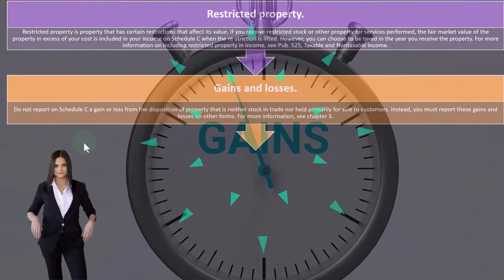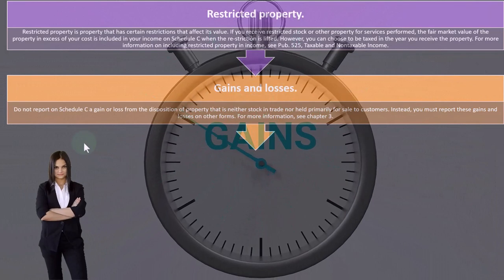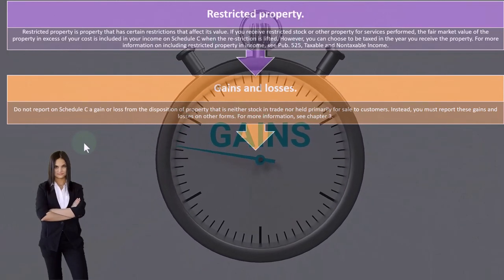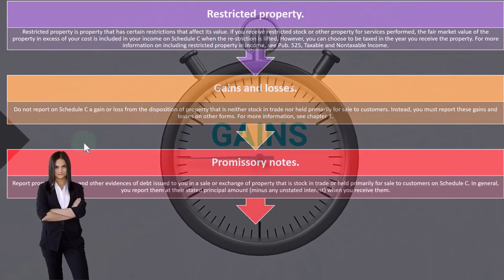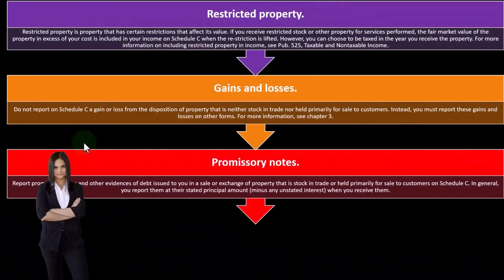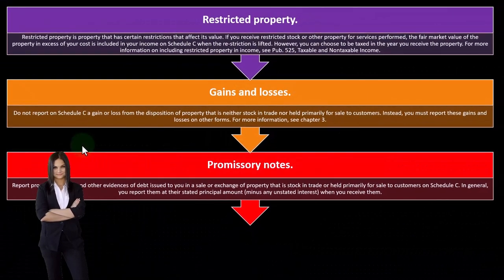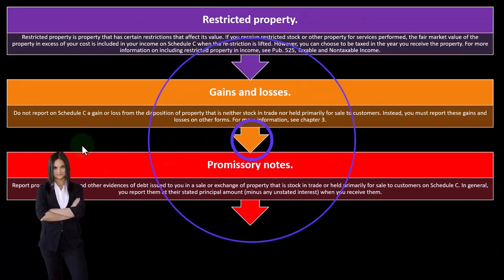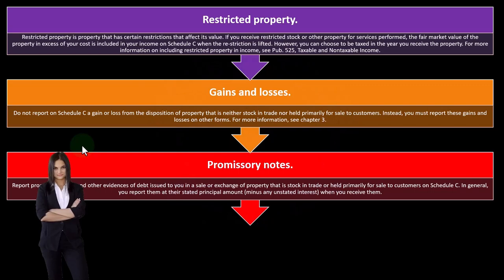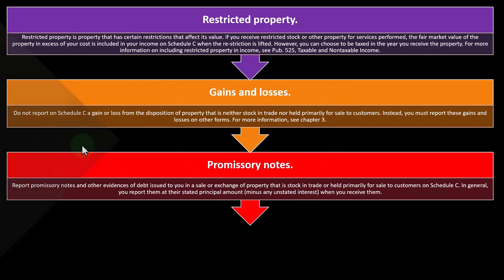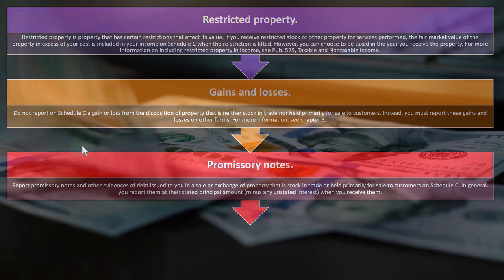For more information, you can take a look at Chapter 3. Gains and loss type of forms might not be on Schedule C, but rather possibly on a Schedule D or something — you might have capital income as opposed to ordinary income.